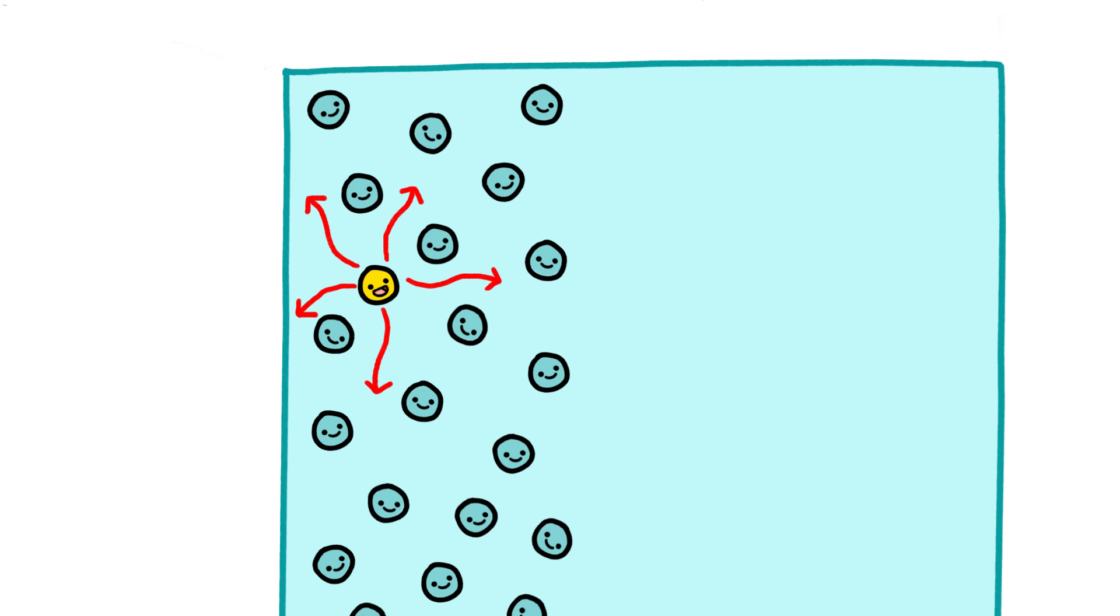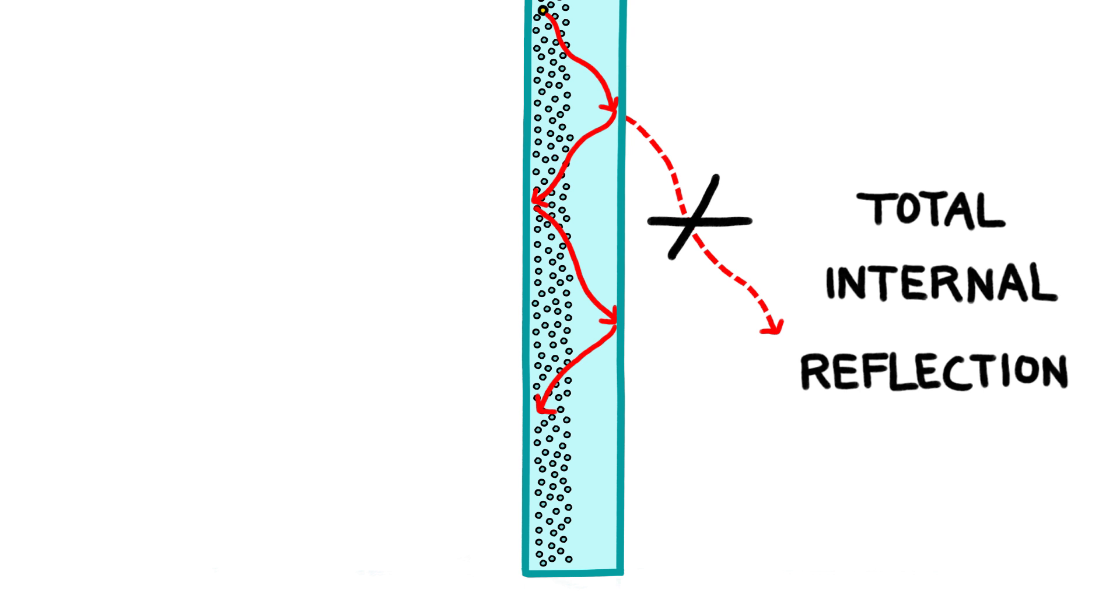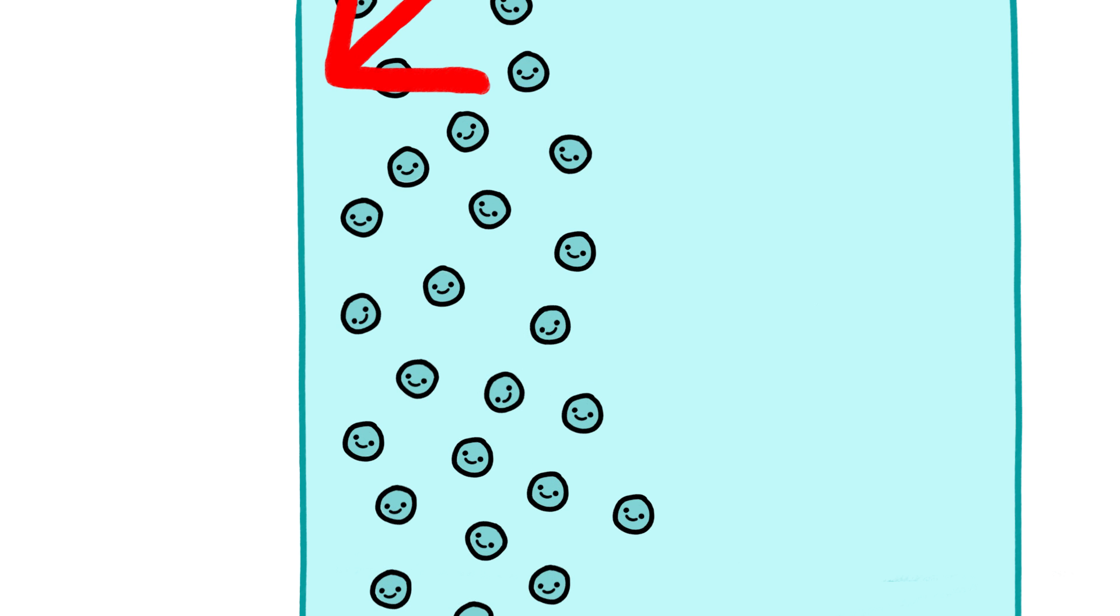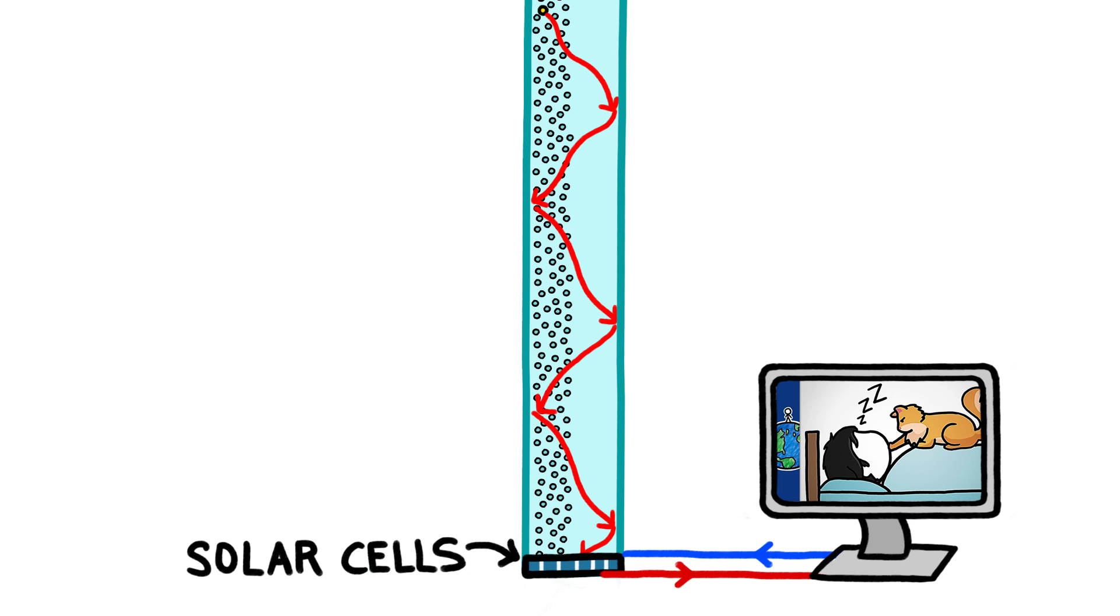The dots then re-emit the energy in longer wavelengths, which bounce along the window pane rather than escaping because of a physics thing called total internal reflection. And because the quantum dots only absorb shorter wavelengths, those re-emitted waves travel through the pane without being reabsorbed by other dots. When they reach the edge, they hit tiny solar cells that convert them into electricity.